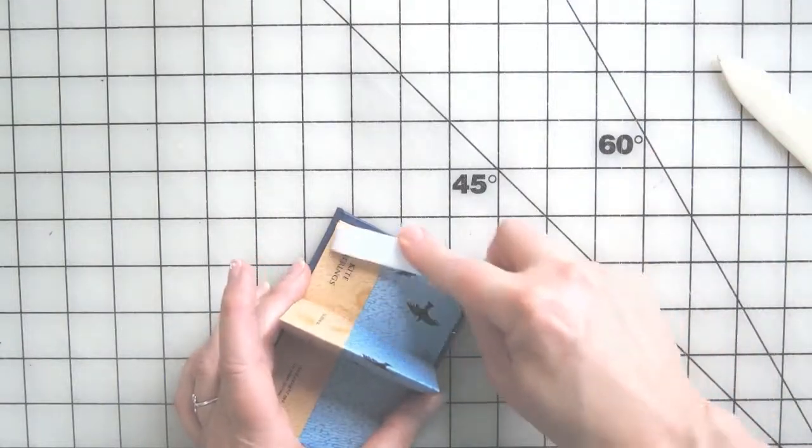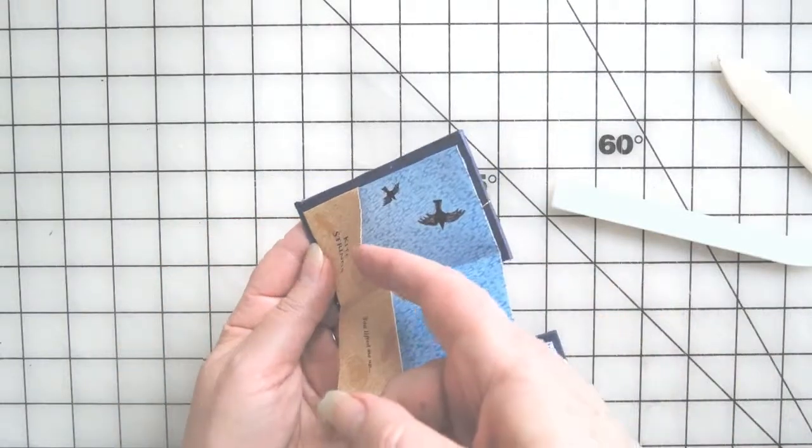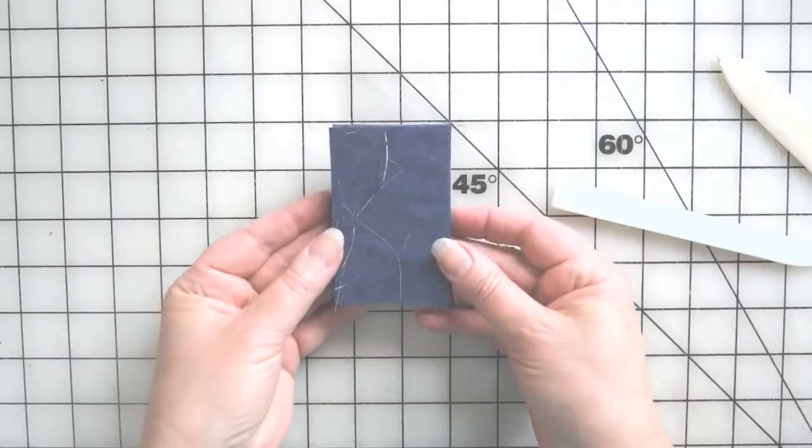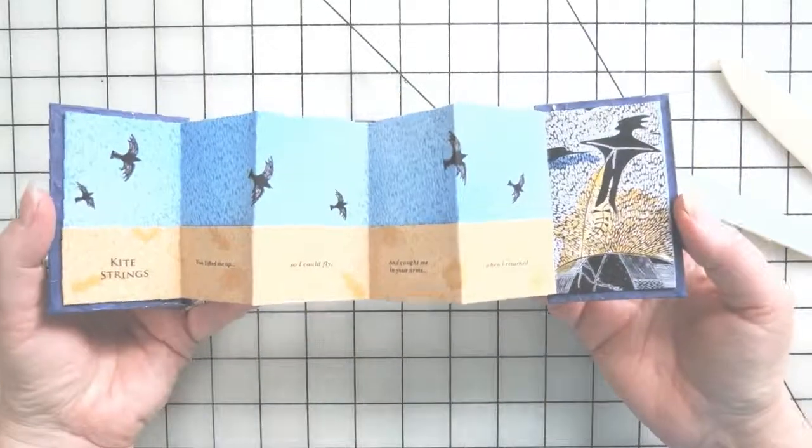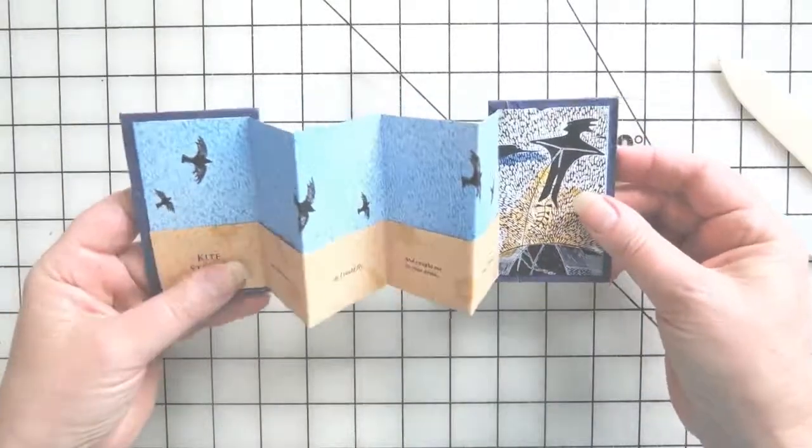And you can see what a nice pocket that makes when we flipped that edge over—it's a nice little pocket in there. And there you have it, a little pocket accordion. Thank you, Peter and Donna, for showing us how to make this in your book.